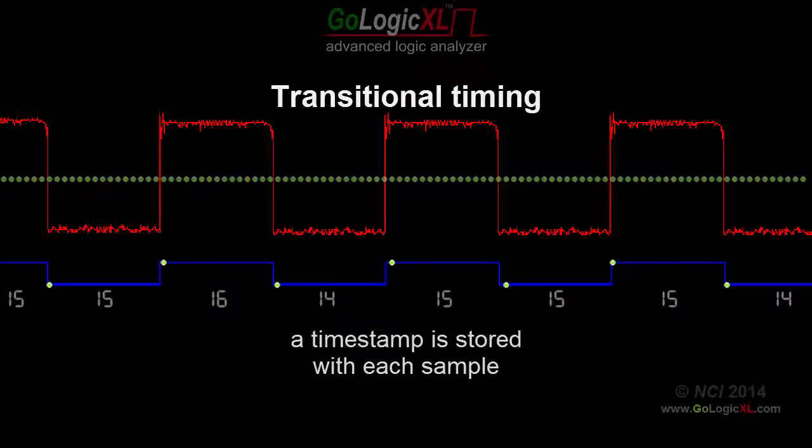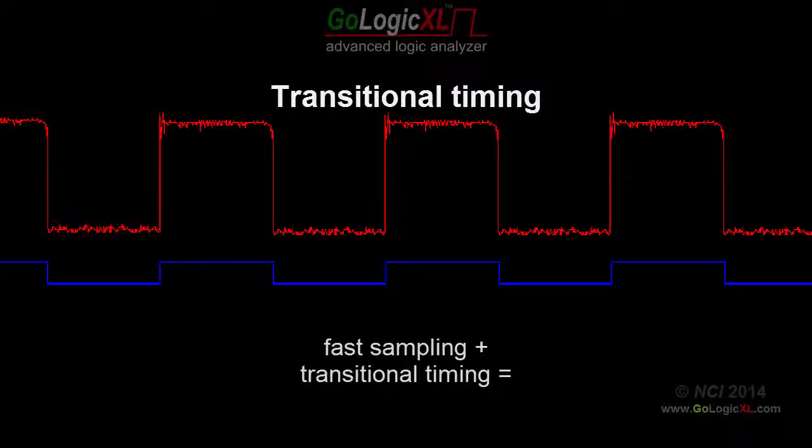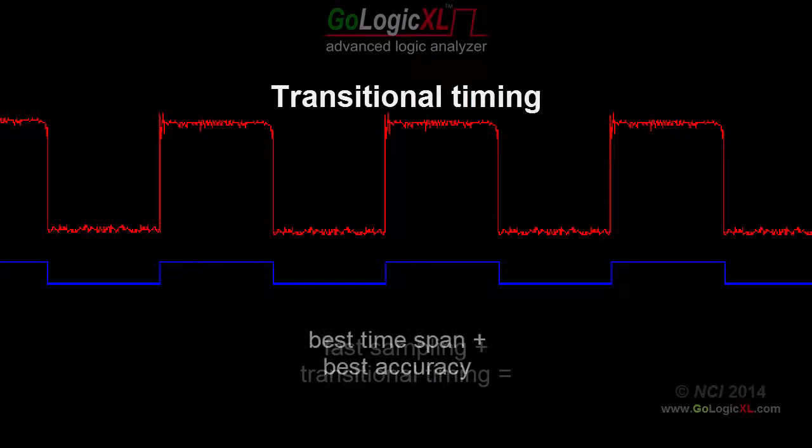Even if your signals are constantly changing, it's still best to use transitional timing mode when possible and oversample the signals excessively. This technique captures a highly accurate representation of the input signals, yet the trace still spans at least twice as much total time had normal timing mode been used.